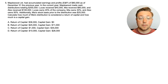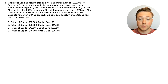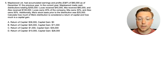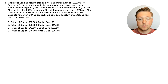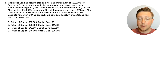Here is question five. Maplewood LTD has accumulated earnings and profits of $80,000 as of December 31st of the previous year. In the current year, Maplewood made cash distributions totaling $200,000: Lucas received $40,000, Mia received $60,000, and Alex received $100,000. Lucas owns 20% of the company, Mia owns 30%, and Alex owns 50%. Additionally, Mia's stock basis prior to the distribution was $25,000. Calculate how much of Mia's distribution is considered a return of capital and how much is a capital gain.